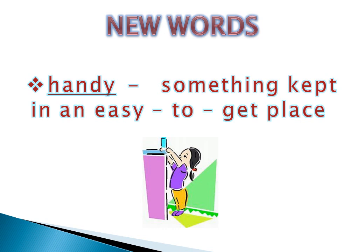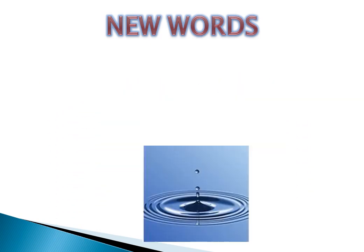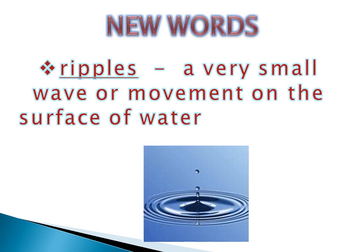Our next new word is 'gleaming,' and it means shining. Can you see the star shining? So, the new word is gleaming and it means shining. Next word: 'ripples' — recall those waves? Ripples means a very small wave or movement on the surface of water.